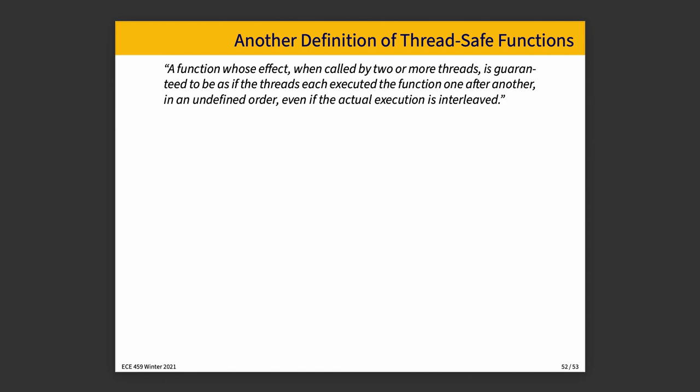And if you wanted another definition of a thread safe function, it is a function whose effect, when called by two or more threads, is guaranteed to be as if the threads each executed the function one after another in an undefined order, even if the actual execution is interleaved. Again, if you've taken a databases course, you might picture something similar to this when we talk about transactions, that if transactions have to be serializable, then it means the outcome is as if the transactions happened in a specific order sequentially. So first transaction A and then transaction B or first transaction B and then transaction A, even if they both ran concurrently, if their operation was interleaved. And if you have thread safe functions, it doesn't matter if they run in an interleaved fashion. There is an order in which you can say it's as if it happened in that order. And that gives you some reassurance that it is in fact correct.